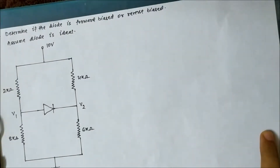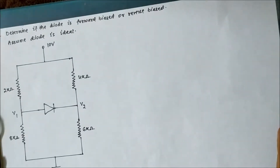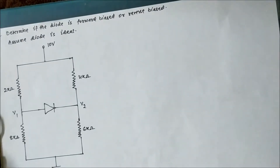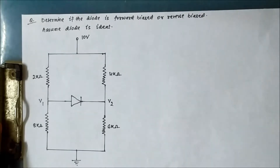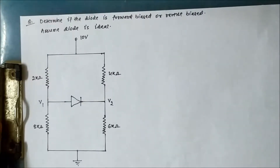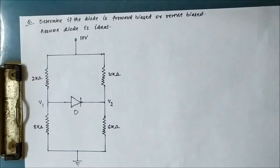Hello friends, welcome to Engineering Tutorial. We'll continue discussing problems related to PN junction diodes. In my previous video we discussed two or three problems related to PN junction diodes, understanding various concepts associated with the connection of diodes in a circuit and the methods of forward and reverse biasing. We'll continue that discussion with another numerical problem, and it has been asked to determine whether the diode connected is forward biased or reverse biased, or whether it is on or off.